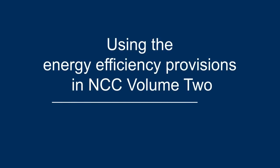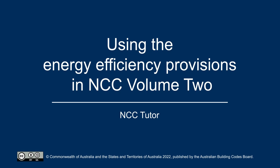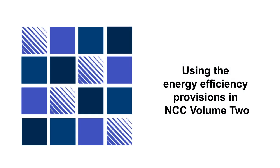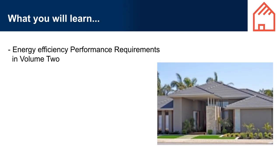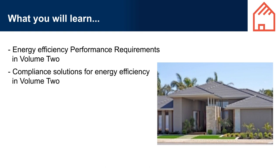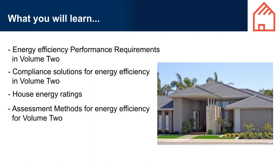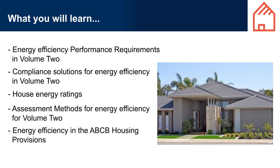Welcome to Using the Energy Efficiency Provisions in NCC Volume 2. The focus of this presentation is the energy efficiency provisions in NCC Volume 2 and the related housing provisions. This presentation has a practical focus and looks in detail at the specific performance requirements, the DTS provisions and assessment methods for energy efficiency that apply to Class 1 and Class 10 buildings. Topics covered include: Energy Efficiency Performance Requirements, Compliance Solutions, House Energy Ratings, Assessment Methods, Energy Efficiency in the ABCB Housing Provisions, and Other Useful Resources.